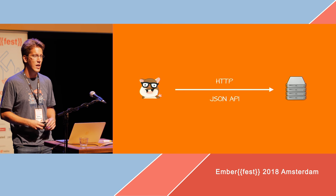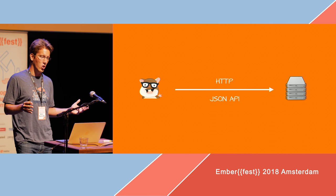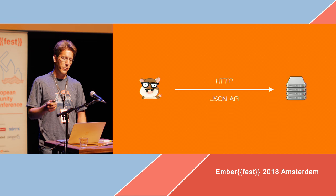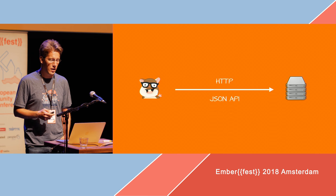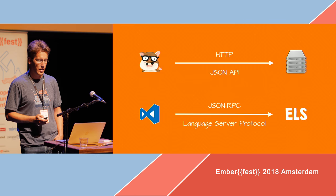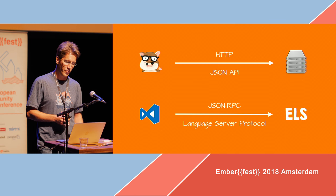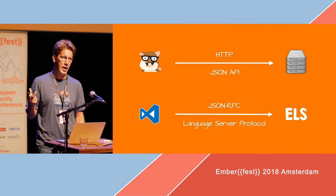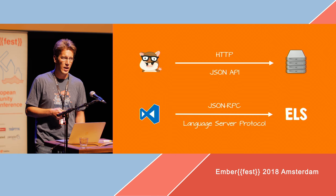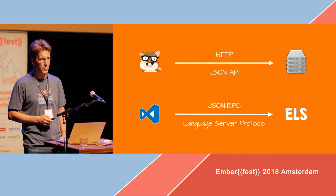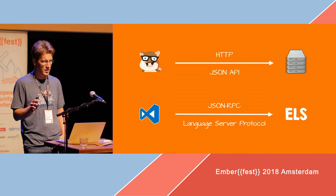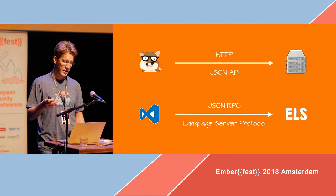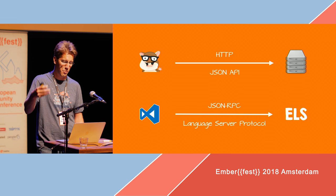Basically how it works is this: every usual Ember app is talking to some backend server, usually done via HTTP, often via JSON API. A language server works quite similar. You have the text editor as a client, and the Ember language server as the server. Instead of using HTTP, it's using JSON RPC, which is a very simple, small protocol. And instead of using JSON API as the payload, it's using something called the language server protocol, which is built on top of JSON RPC.